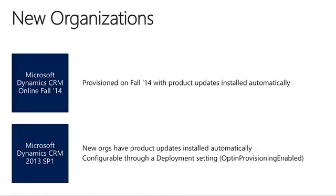New CRM Online organizations created after this release will automatically have the new features enabled. After installing Service Pack 1 for Microsoft Dynamics CRM 2013 on-premises, any newly created organizations will default to having the new features installed. A new Advanced Deployment setting is available which allows you to control whether new organizations automatically install the new features. If this setting is disabled, new organizations will need to follow the steps shown earlier to enable the new features.